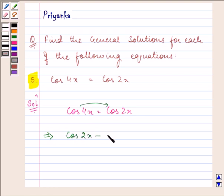Or 2 sin[(2x+4x)/2] sin[(4x-2x)/2] equals 0.